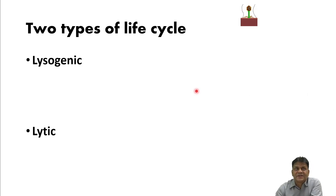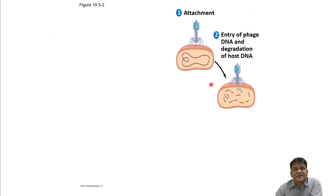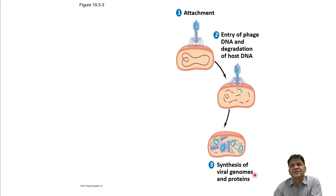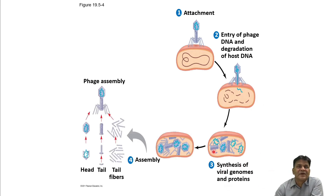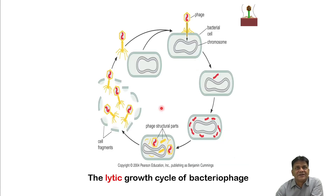There are two types of bacteriophage life cycles: lytic and lysogenic. In the lytic cycle, viruses enter the bacteria, replicate, and after assembly of viral genome and proteins, the bacteria ruptures and releases all the progeny phages. Because they lyse the bacteria, this is called the lytic cycle, and a large number of progeny viruses are produced.